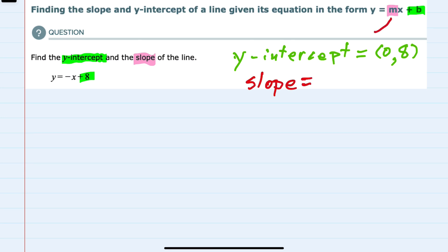And then the slope is the number in front of the x, and for this example, we only see a minus in front of the x. So the coefficient is always 1 when it's not written explicitly, so our slope here is minus 1.